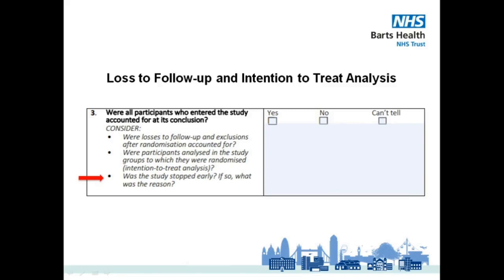People might give different answers here. Some might consider that, strictly speaking, no ITT analysis was performed because one participant from the Duloxetine group wasn't accounted for in the results analysis. Some might think that, since it is a drug study, the ITT analysis was altered, taking into account only the participants who had at least one drug dose, and assume that one patient wasn't accounted for because they didn't take at least one dose of the study drug. In this case, we would tick YES. If unsure, you can always choose CAN'T TELL.